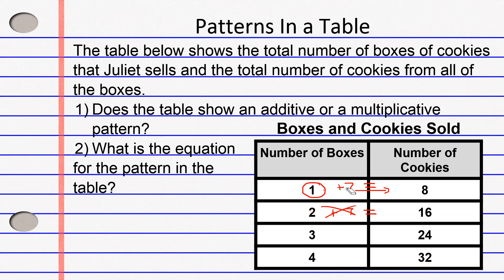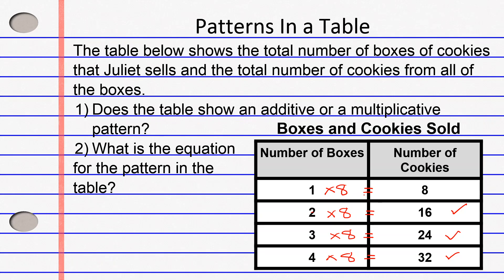Additive didn't work, so let's try multiplicative. What do we have to multiply by 1 to get to 8? Well, 1 times 8 equals 8. Let's see if 2 times 8 equals 16 — it sure does. 3 times 8, does that equal 24? Yes, it does. What about 4 times 8? Does it equal 32? Yes, it does. Since we could multiply all of the number of boxes on the left-hand side by the same number to get the right-hand numbers, we know it is a multiplicative pattern.